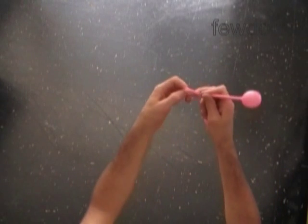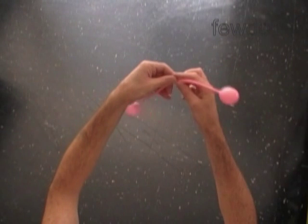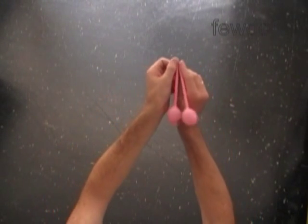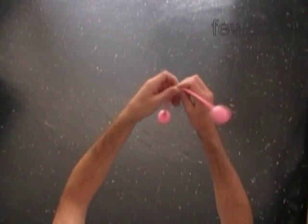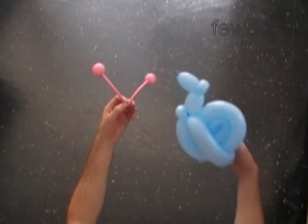Then we have to find the center of the balloon. At the center of the balloon we have to tie a knot. This knot cuts the air flow between bubbles, preventing them from deflating. That's it! We have made the antennas.